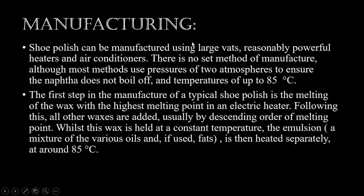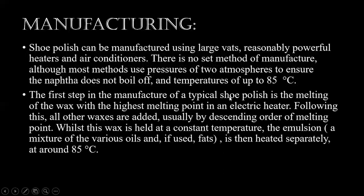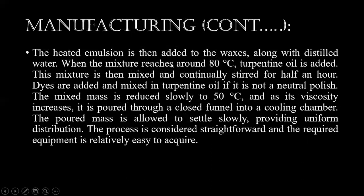Shoe polish can be manufactured using large vats, reasonably powerful heaters, and air conditioners. There is no set method of manufacture, although most methods use pressures of 2 atmospheres to ensure the naphtha doesn't boil off, and temperatures of up to 85 degrees Celsius. The first step is melting the wax with the highest melting point in an electric heater. Following this, all waxes are added in descending order of melting point. While the waxes are held at high constant temperature, the emulsion — a mixture of various oils and fats — is heated separately at around 85 degrees Celsius. The heated emulsion is then added to the waxes along with distilled water.